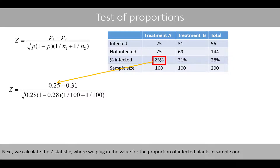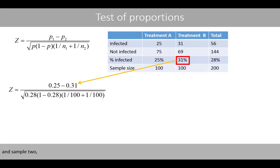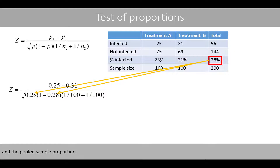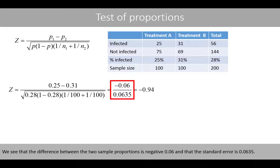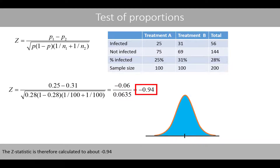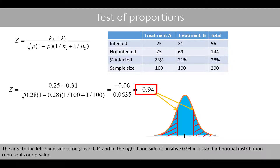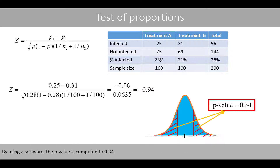Next, we calculate the z statistic, where we plug in the proportion of infected plants in sample 1 and sample 2, the pooled sample proportion, and the sample sizes of the two groups. We see that the difference between the two sample proportions is negative 0.06, and that the standard error is 0.0635. The z statistic is therefore calculated to about negative 0.94. By using software, the p-value is computed to 0.34.